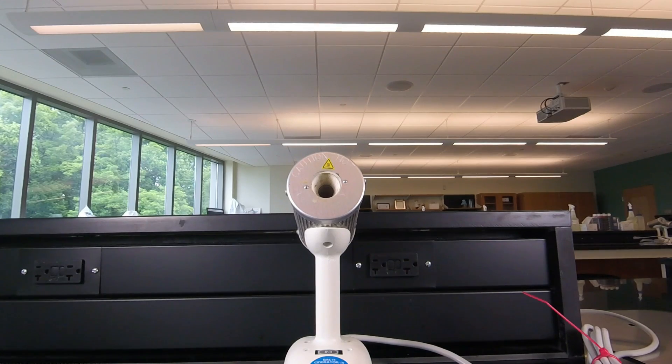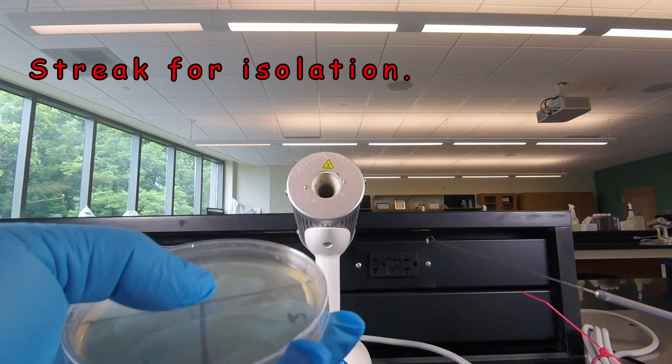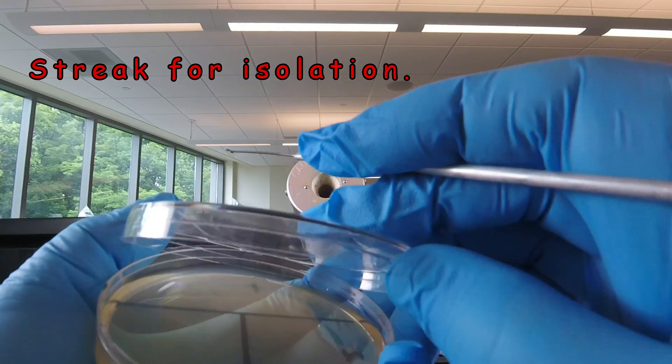Now we're ready to obtain the pure culture from the portion of the colony that we picked off on our inoculating loop. So we take a sterile plate of medium again, and we're going to streak it for isolation like we learned in a previous video.